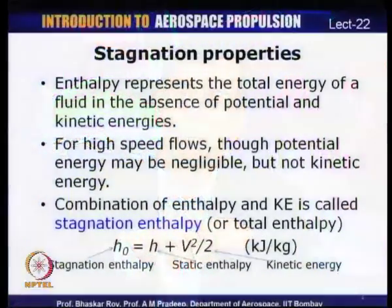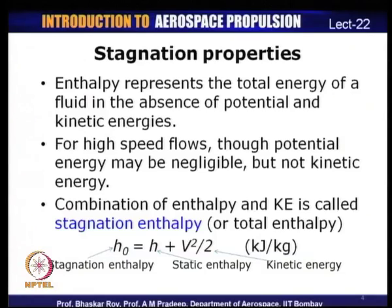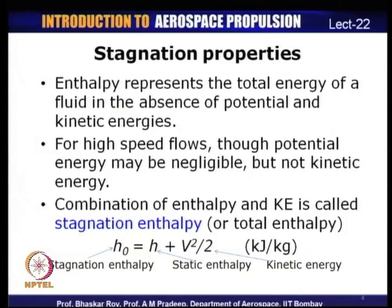Why it is called stagnation enthalpy will be clear as we discuss further. The static enthalpy and kinetic energy term together are known as stagnation enthalpy. Stagnation enthalpy, denoted H₀, equals H (the static enthalpy) plus V²/2 (the kinetic energy). These are all per unit mass, so it is specific stagnation enthalpy: H₀ = H + V²/2.